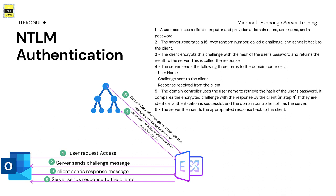Now the Exchange Server has the username, the challenge it sent to the Outlook client, and the response received from the Outlook client. The Exchange Server sends these details to the domain controller. The domain controller retrieves the hash of the user's password, compares the encrypted challenge with the response, and if they are identical, authentication is successful. The domain controller notifies the Exchange Server, which sends the appropriate response back to the client, completing authentication.